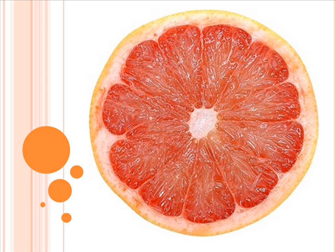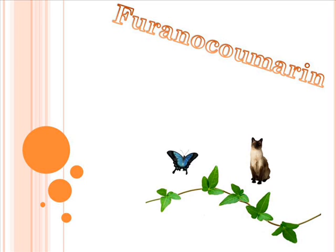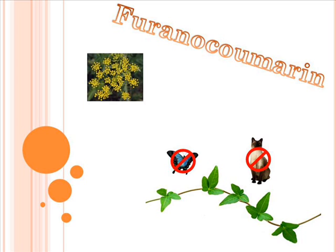First, we will discuss the chemicals found in grapefruits that cause the drug interaction. Furanocoumarin is a phytochemical found in many plants. It is used as a defense mechanism against mammals and insects. Aside from the interaction between grapefruits and drugs, another effect is dermatitis from wild parsnips, which is also caused by the furanocoumarins found in these plants.